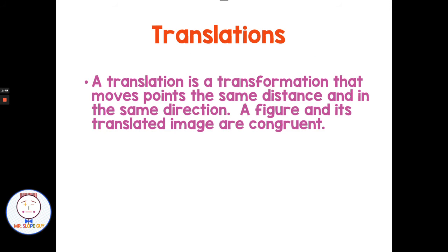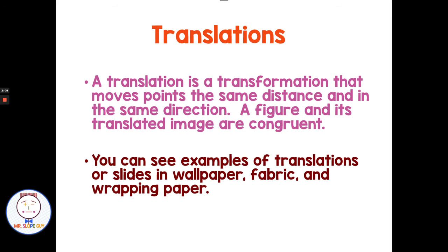With translations, we're moving the point the same direction and the same distance. The image and the original are both congruent, meaning everything stays the same size and shape — the size of the puzzle piece would not change. Congruent means same in size and shape. You can see examples of translations on things like wallpaper, fabric, or wrapping paper — a repeated pattern. Like a candy cane that slides over and you see another candy cane — those are examples of translations.